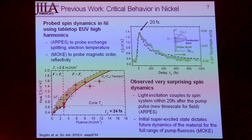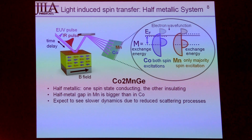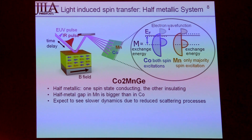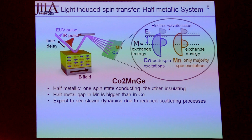That motivated the work I'm going to talk about now. As a follow-up, we thought things were happening faster than people could see. But we knew we couldn't see fast dynamics in a single element — in ferromagnetic nickel, that's just one element and we didn't see very fast dynamics there. So we went to look at a compound sample. This sample is cobalt-manganese-germanium — a half-metallic Heusler alloy — which has magnetic moments carried by both the cobalt and the manganese.